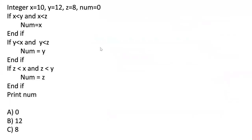Now we have a pseudo code question. Pseudo code questions are less common — most TCS NQT questions come from C and Java — but today one appeared. In the pseudo code, x = 10, y = 12, z = 8, and num = 0. First condition: x < y AND x < z, that is, 10 < 12 is true but 10 < 8 is false, so the AND condition is false.